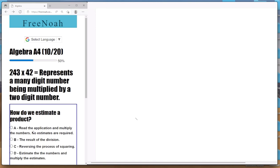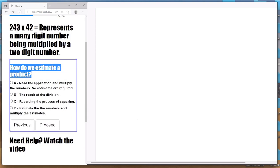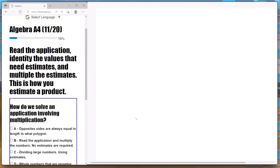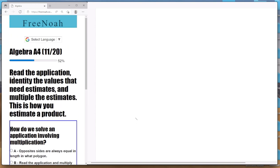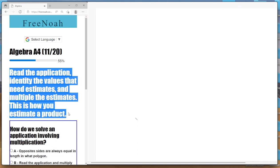Estimating products. So how do we estimate a product? Learn your times tables, 1 through 12, makes things easier. Of course we have calculators now that make things way easier. It says here, how do we estimate products? Well, we read the application, identify the values that need estimates, and multiply the estimates.